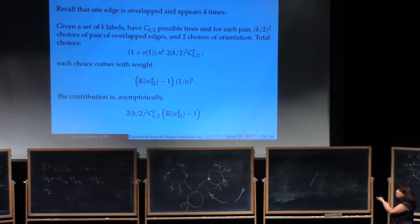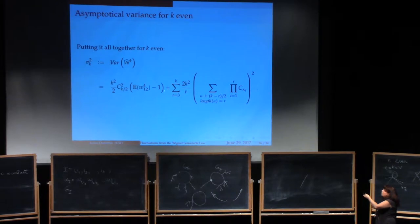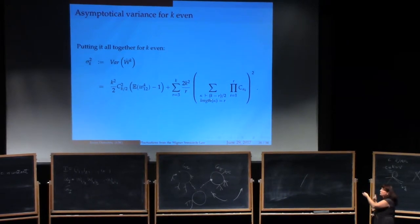So to assemble things, for the case when k is even, this is the variance right here. So this comes from terms that correspond to a single tree with one edge walked on four times and everything else walked on twice. And these come from terms that correspond to one cycle with dangling trees in wi, the same cycle with some other dangling trees in wj, and overlap on the cycle. This is the variance for k even.